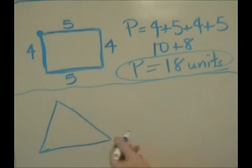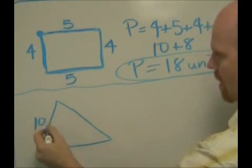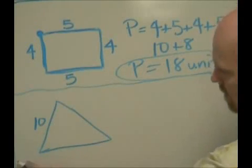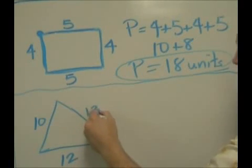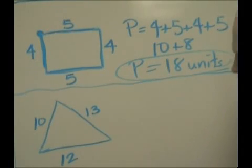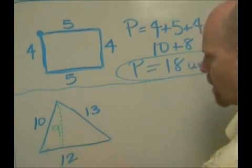and that's going to be your perimeter. Let's take a look at this triangle. Let's say this slant is ten, this base, let's call it twelve, and let's call this one thirteen, and let's say this height is nine, okay?